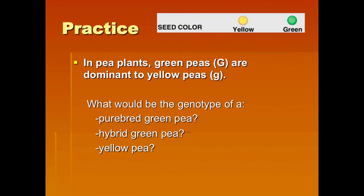Let's go into peas. When we talk about genetics, you have to talk about Gregor Mendel — he is considered the father of genetics, and he did all his studies on pea plants. Green peas are dominant and yellow peas are recessive. Green peas are big G, and yellow peas are little g. The genotype of a purebred, meaning homozygous, green pea would be big G, big G. A hybrid green pea would be big G, little g. And a yellow pea would be little g, little g.